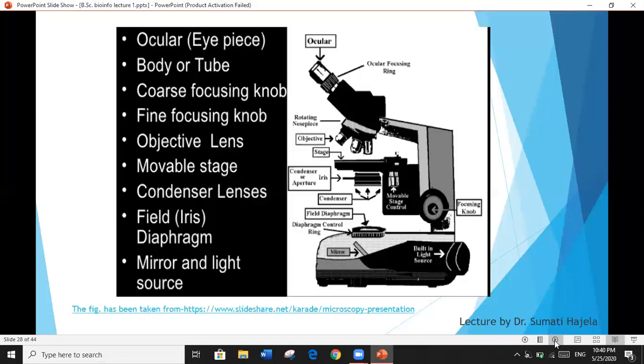Specimen stage: it is the square or round type. The square type of stage may be immovable or movable. Immovable stage possesses clips to hold the slides. Movable stage can be moved with the help of gliders. It can be moved forward, backward, and sideways. Round stage is used in polarizing microscopes.